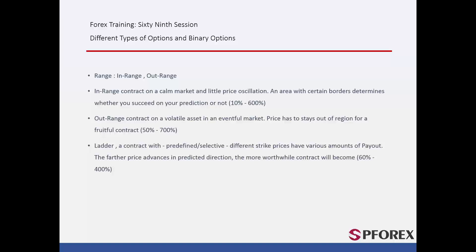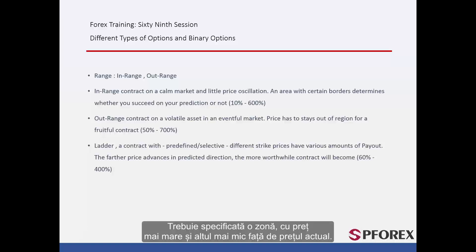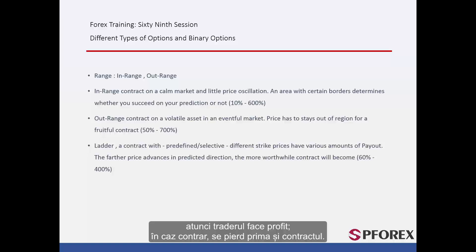In-Range: Considering that an asset has a monotonic motion, a trader may speculate that a contract with a one-week expiration time would be successful. An area with higher and lower edge prices from the current price must be specified. If at the expiration time the price does not cross the boundaries of the defined area, then the trader gains profit. Otherwise, they would lose the premium and the deal.